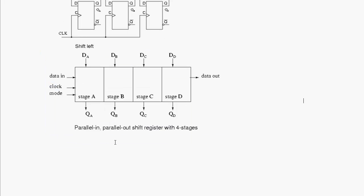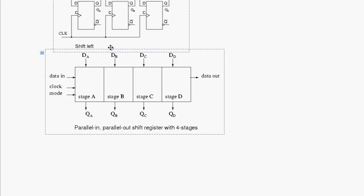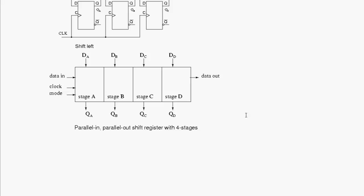Parallel in to parallel out is not too complicated to understand either. If we ignore the data in and data out on the sides, the parallel in to parallel out would just be these four bits of data applied to the four flip-flops on the clock edge. The four bits of data are going to be output to the QA, QB, QC, and QD outputs. So we've got shift right, shift left, parallel in, parallel out.